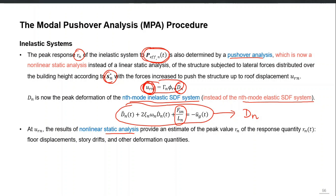We extract all the responses from the pushover analysis and those are the modal responses. For each pushover curve we calculate U_rN and extract all the responses at that particular step of analysis; this becomes our target displacement for each mode.